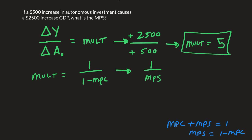Going back to our problem: 5 equals 1 over MPS. And therefore, MPS must equal 0.2.